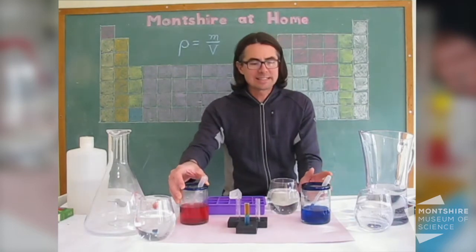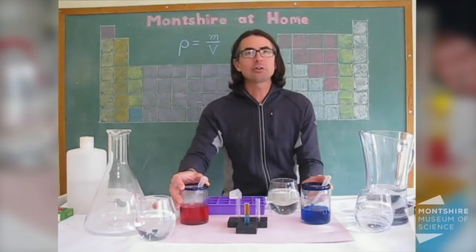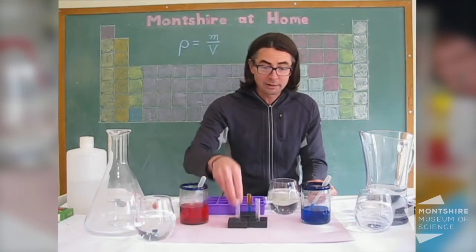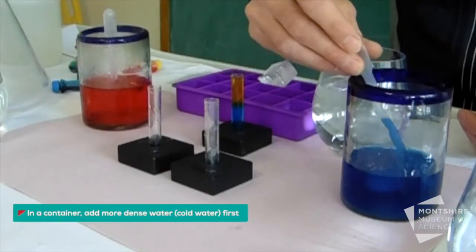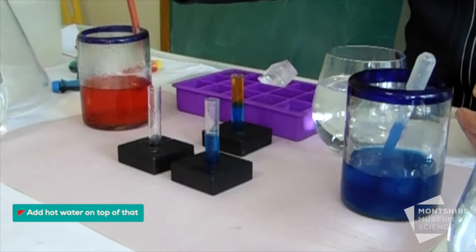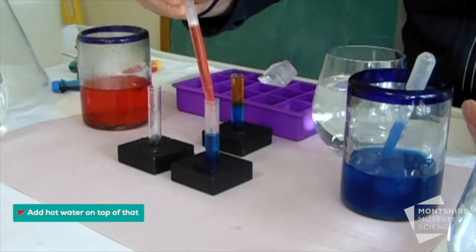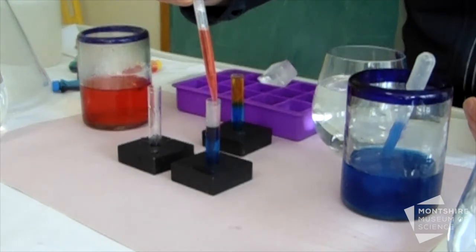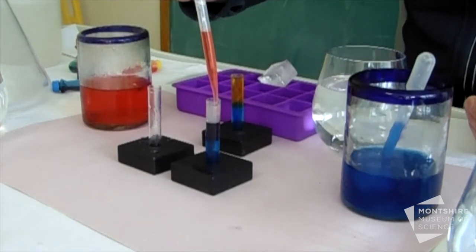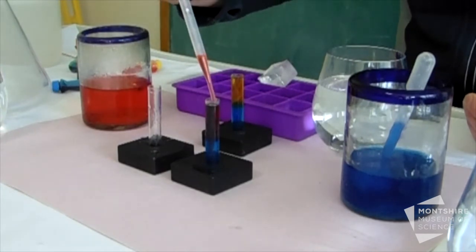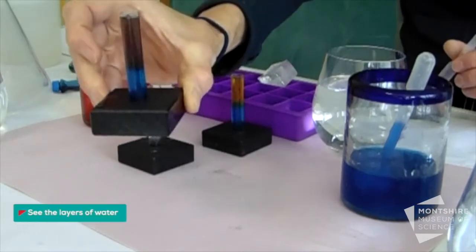Now, I can't really see those changes in volume in the cups here, but we can do an experiment. I'm going to follow pretty much the same procedure we did with our salt water liquid rainbows yesterday. I'm going to add the more dense water first — in this case, my cold water — and then add the hot water on top of it. And we can see those layers inside.